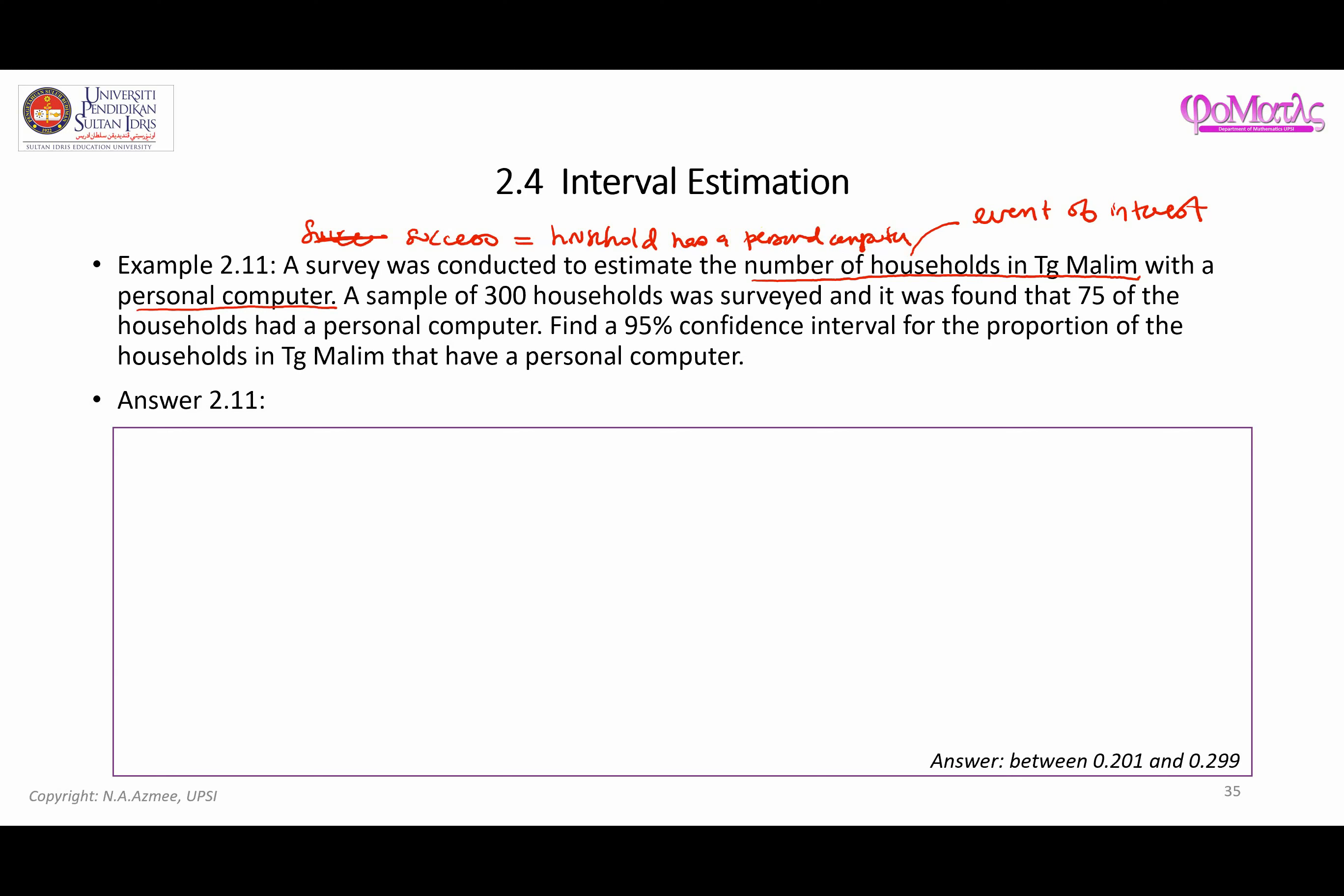Success in this particular example is the situation where the household has a personal computer. Now a sample of 300 households was surveyed, so this is our N. And it was found that 75 of the households had a personal computer, so 75 here is the number of successes X. Find a 95% confidence interval for the population proportion of the households in Tanjong Malik that have a personal computer.